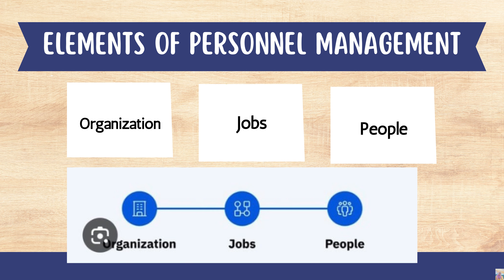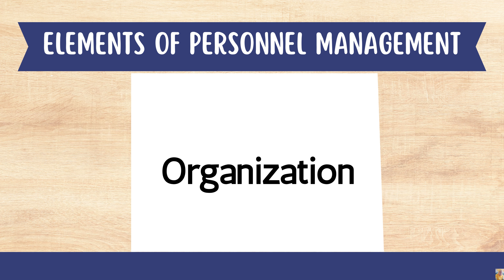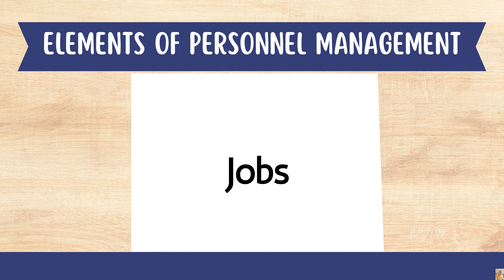Now I will discuss the elements of personnel management. There are two subtopics here. Letter A is the three basic elements, namely organization, job, and people. Organization is a place where all the selected people for their appointed job will work together. Number two is job — it is necessary to appoint a job to the members of an organization to efficiently achieve the desired goal.